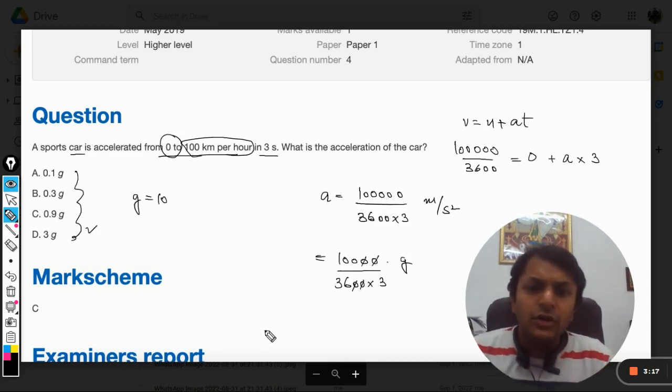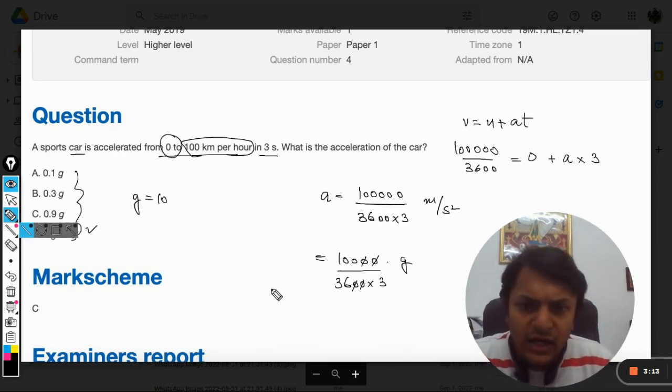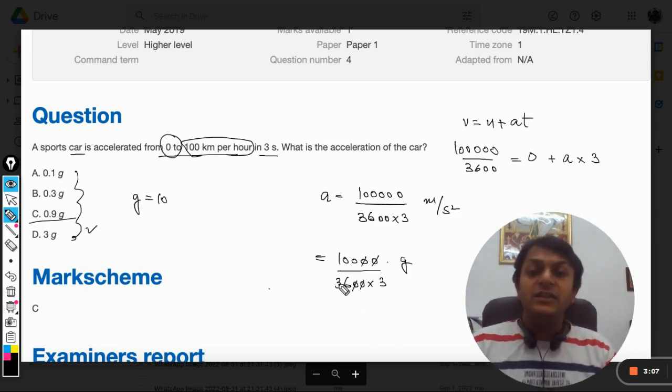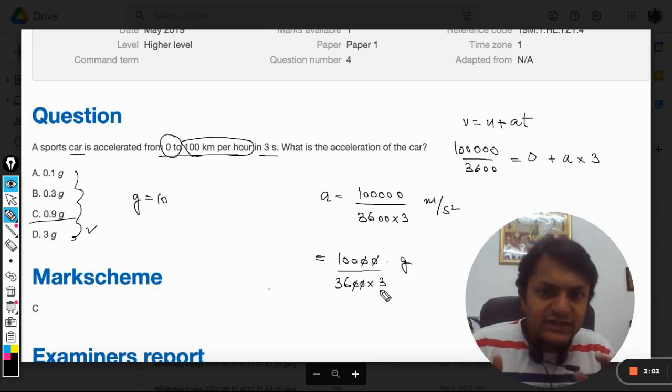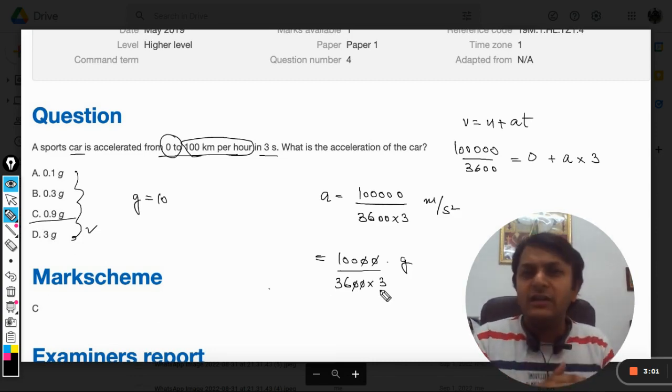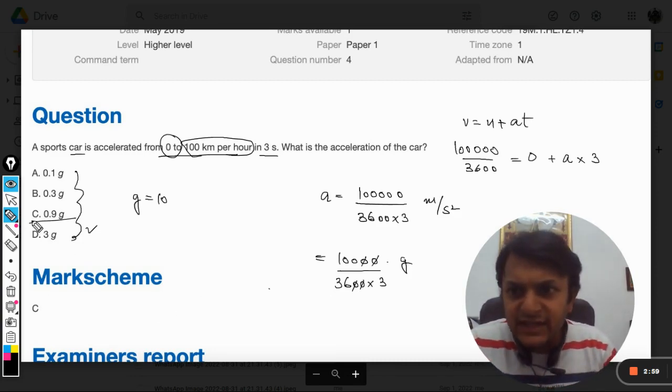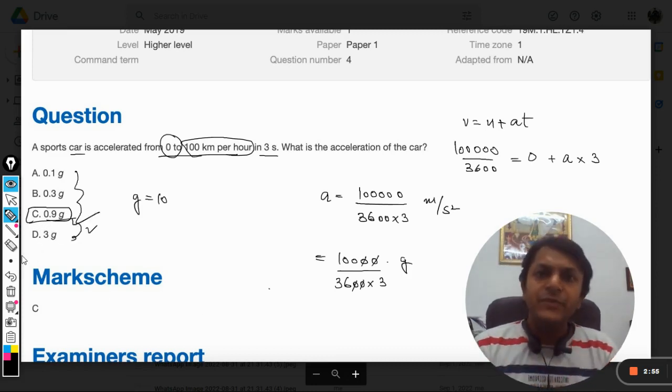So we can now get it all divided. The answer should come like nearly, I would say, 36. They have given c as the answer. Yeah, approximately like 33 times 3 is 99, so 36 times 3 will be a little more than 100. And that is why we can say when we divide it, the answer will become 0.9g.